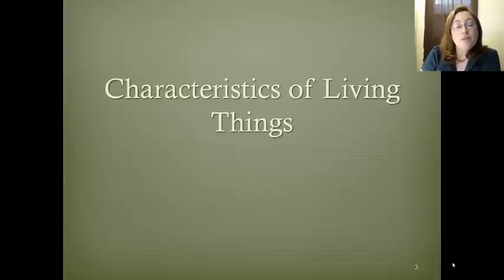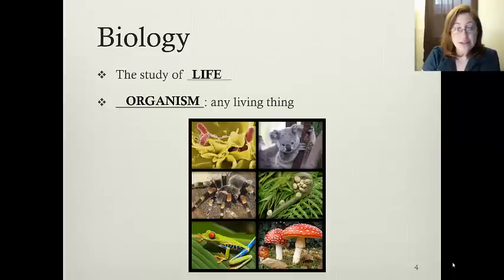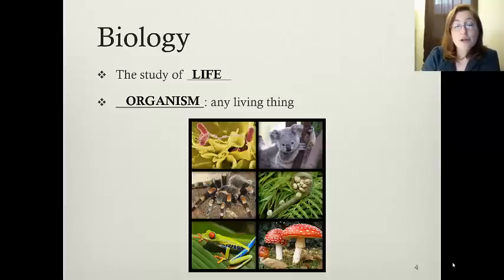First we are going to talk about characteristics of living things, because obviously biology is the study of life. We define any living thing as an organism. As you can see in this diagram, organisms have a lot of diversity. In this picture we have bacteria in the top left corner, a spider, a koala, some mushrooms, and some frogs.